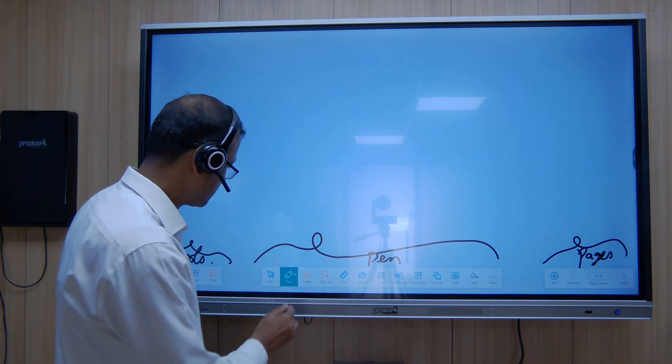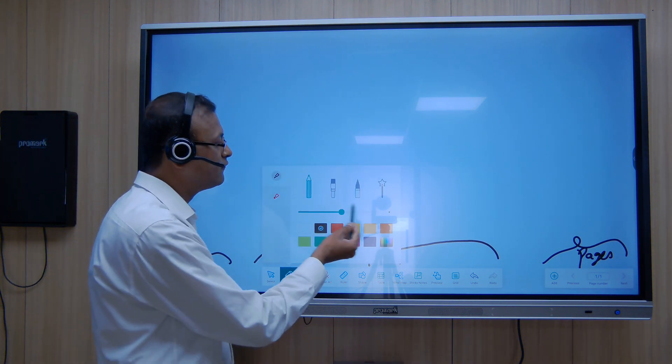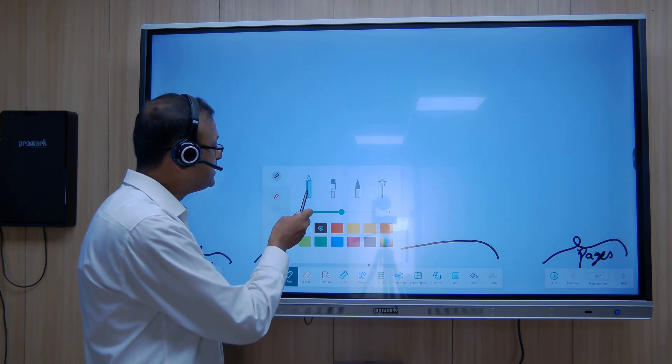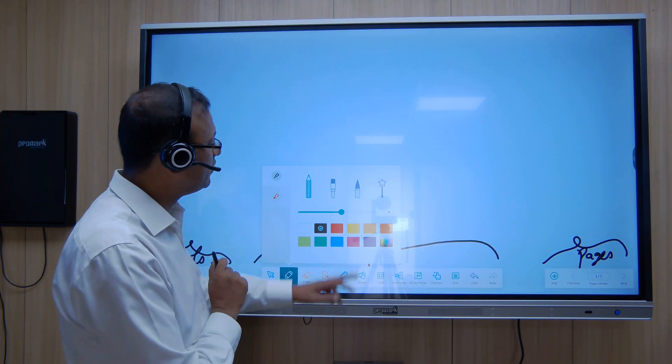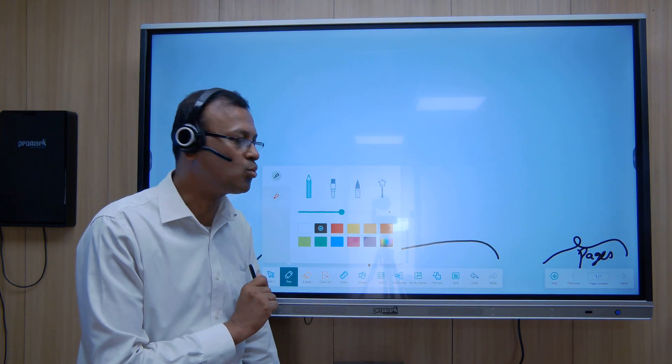Let's start with the pen section. In the pen section we have four options: one is the smooth pen, then we have the brush pen, then we have the pointer, and the magic wand.